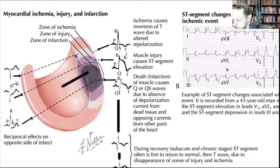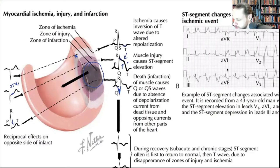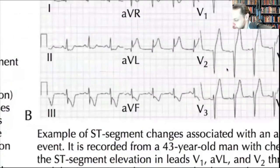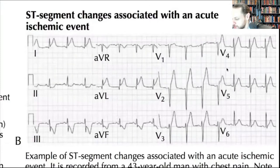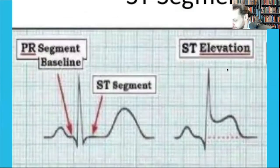ST segment elevation — this is P, Q, R, S, and T is now elevated. If nothing is done, you see deep Q waves develop. These are called pathological Q waves — before STEMI and STEMI they call them Q-wave MI versus non-Q-wave MI. So when looking at the 12-lead, I'm looking for where the elevation is and where the depression is.